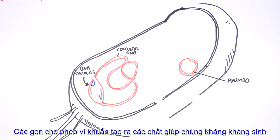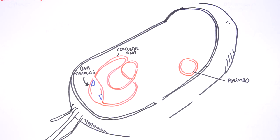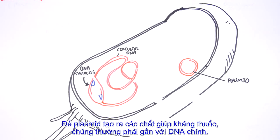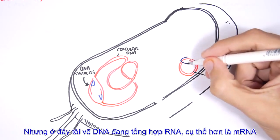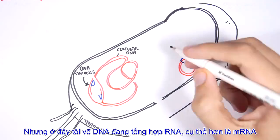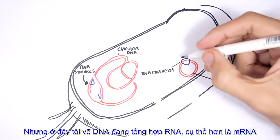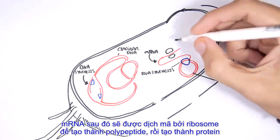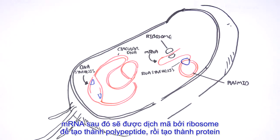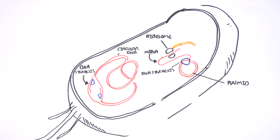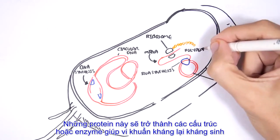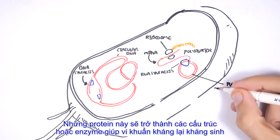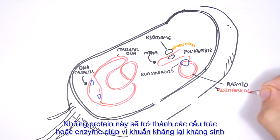It is these plasmids that usually carry the so-called resistant genes — genes that allow the bacteria to make things so that it becomes resistant to antibiotics. For the plasmids to make these resistant things, the plasmid synthesizes mRNA, which is then read by the ribosome to make polypeptides, to make proteins. These proteins become structures or enzymes that help the bacteria become resistant to antibiotics.